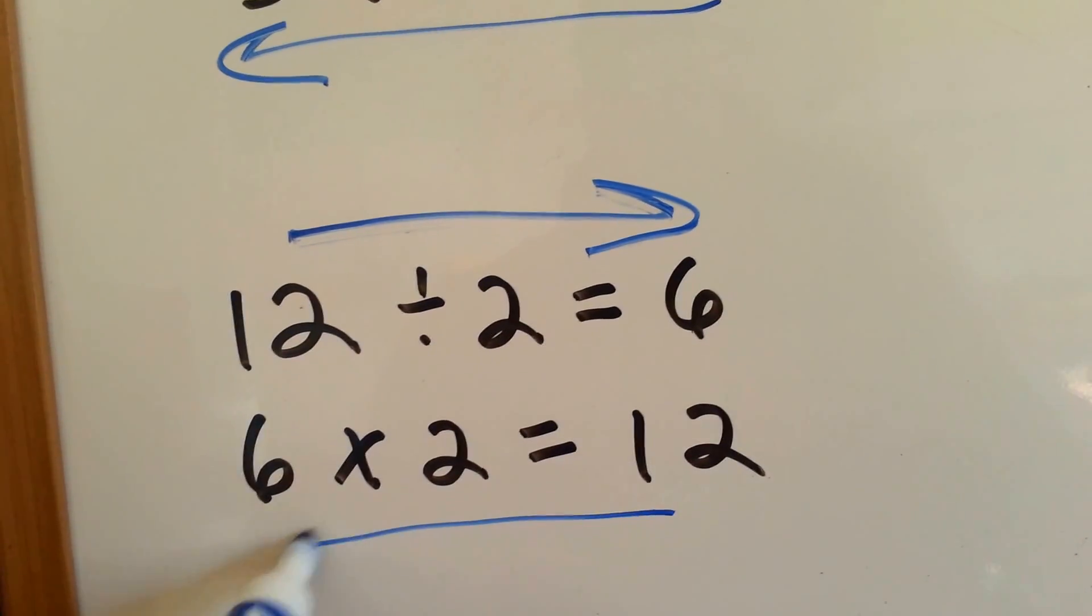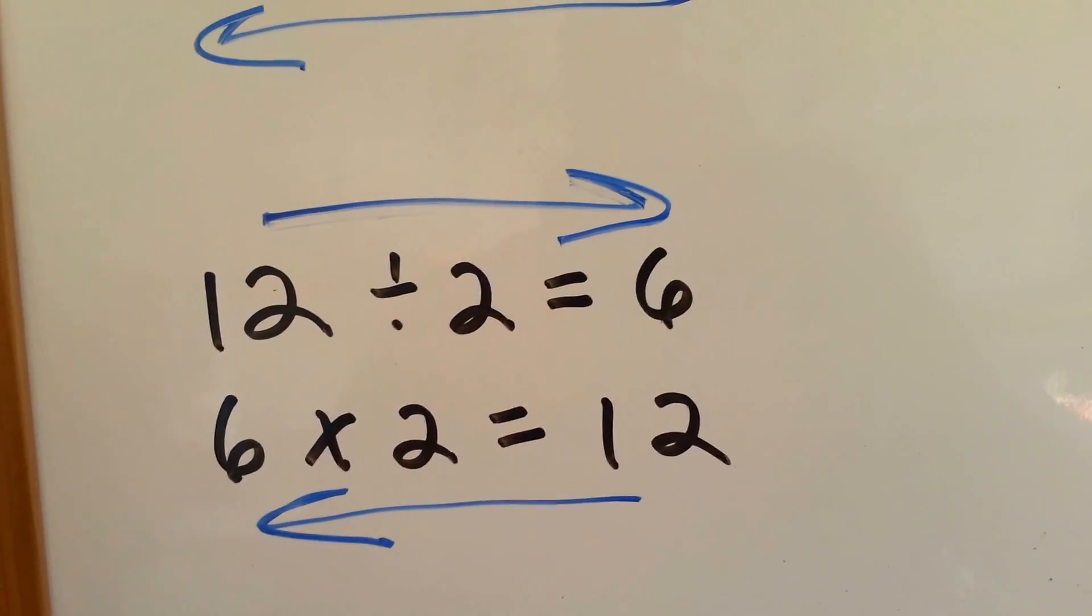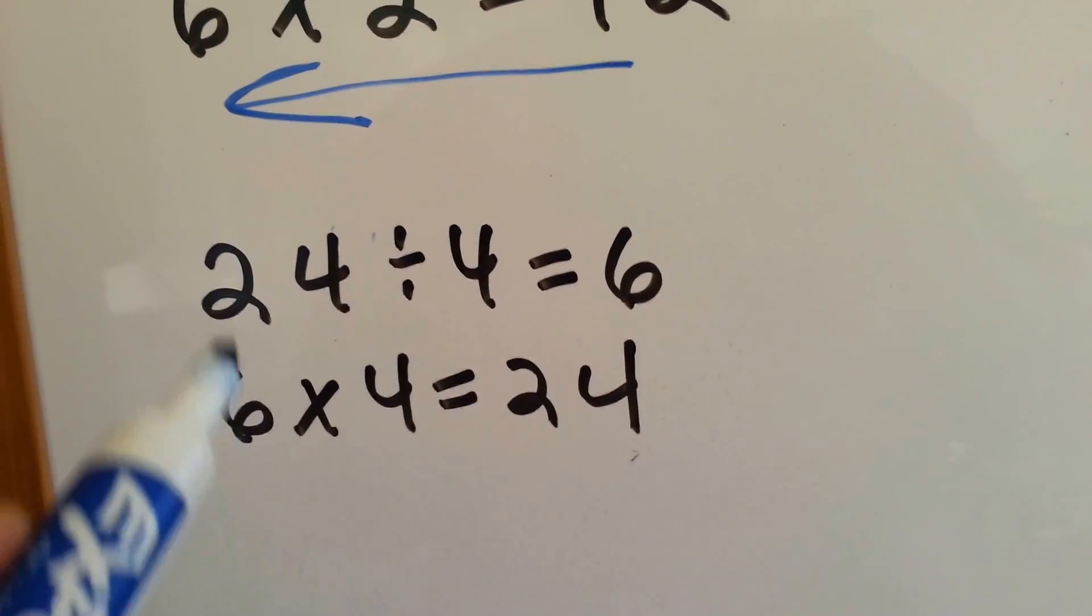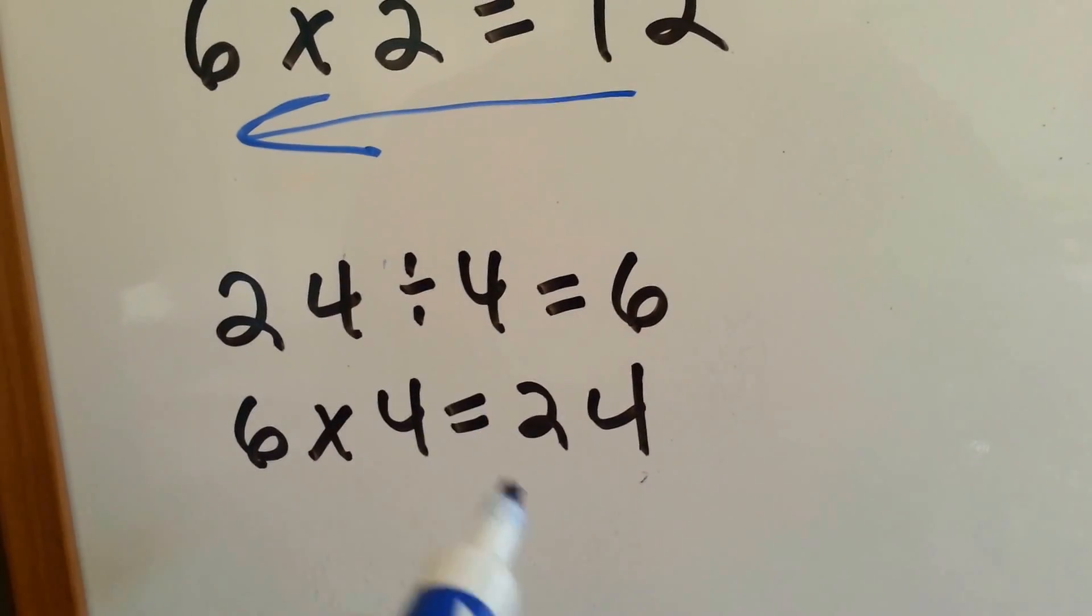On this one, it goes this way, and it's going that way on the multiplication one. 24 divided by 4 equals 6. 6 times 4 equals 24.